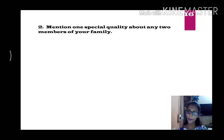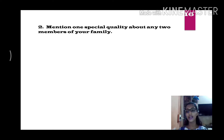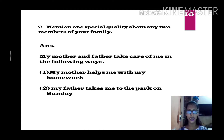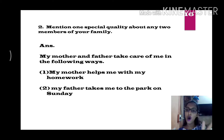Second question on page 16: mention one special quality about any two members of your family. You can write about your father, mother, brother, or sister. For example, I have shown the special quality of mother and father. My mother helps me with my homework, and my father takes me to the park on Sunday. These are their special qualities. You can write anything.